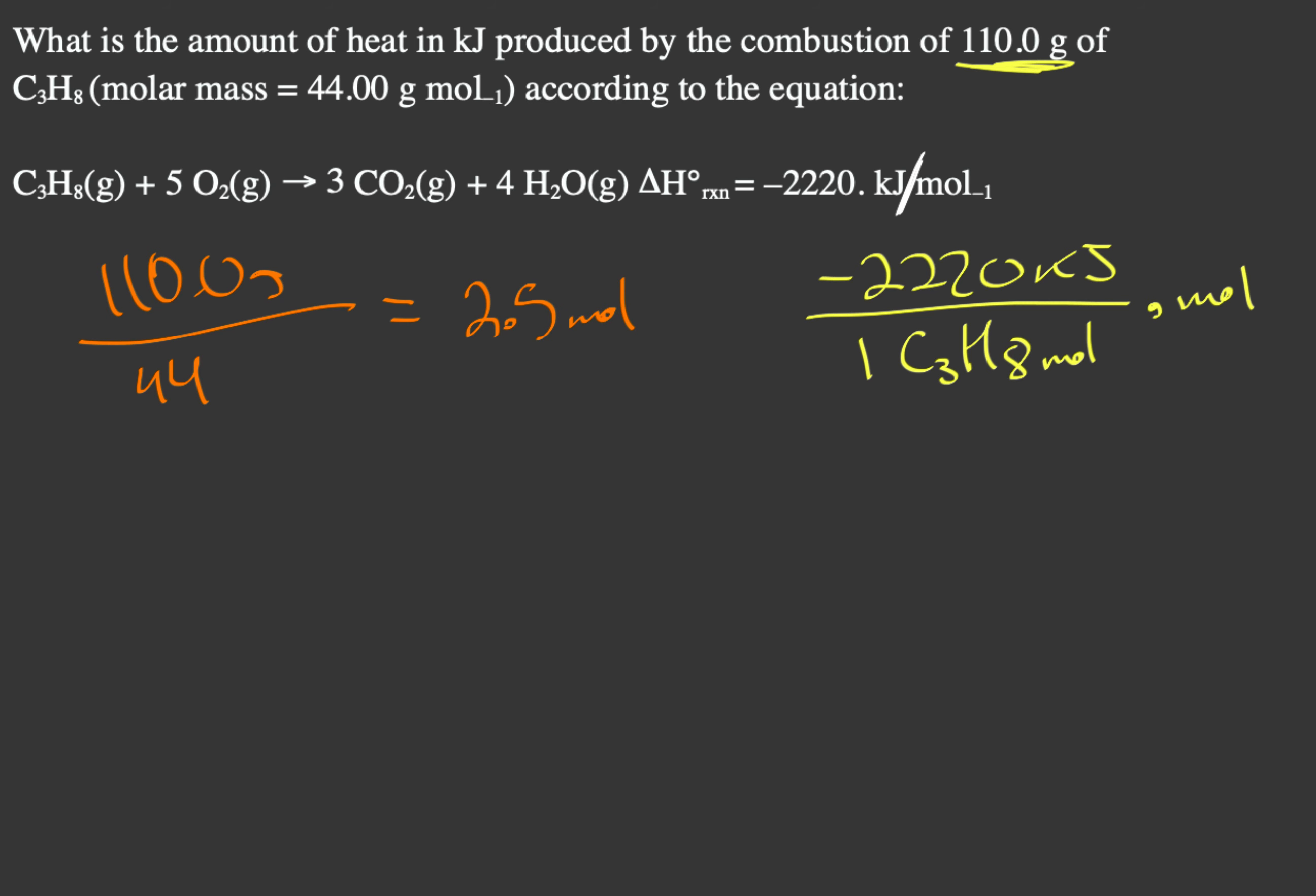So let's multiply that by our enthalpy. We have negative 2,220 kilojoules per 1 mole of C3H8, propane. If we multiply this by our 2.5 moles of propane, we get negative 5,550 kilojoules. And that is your answer.